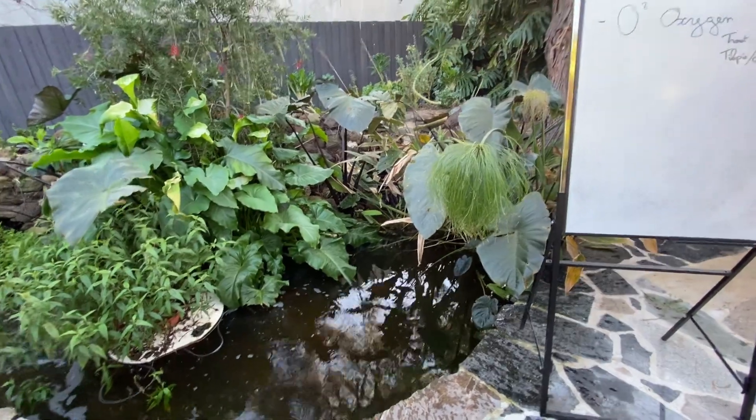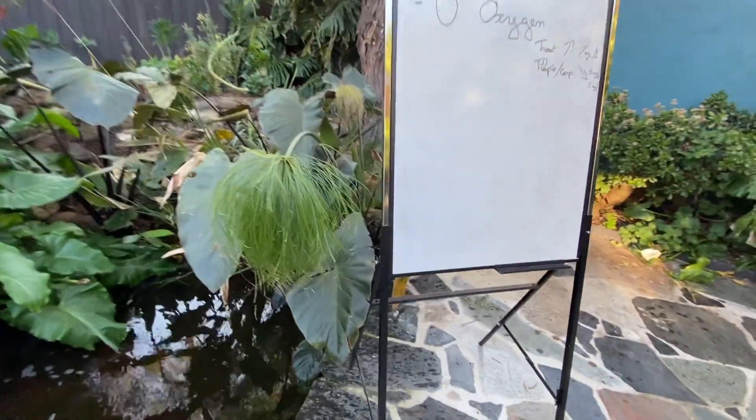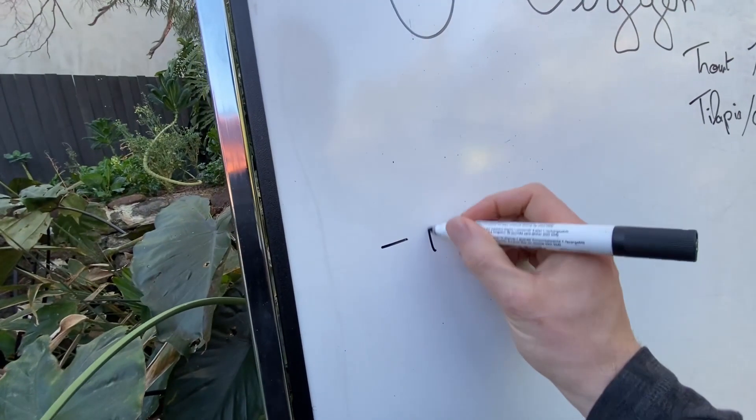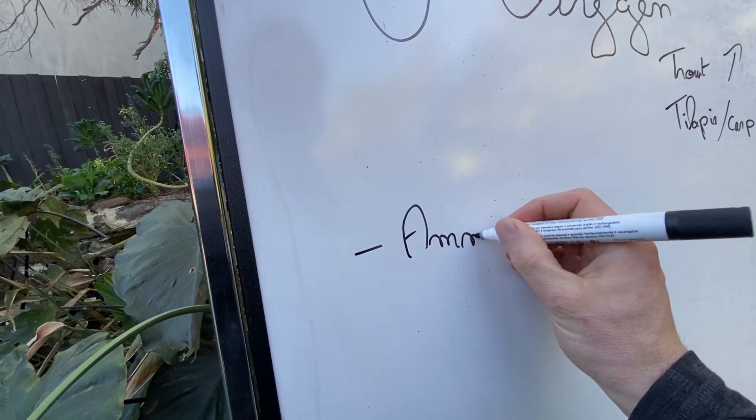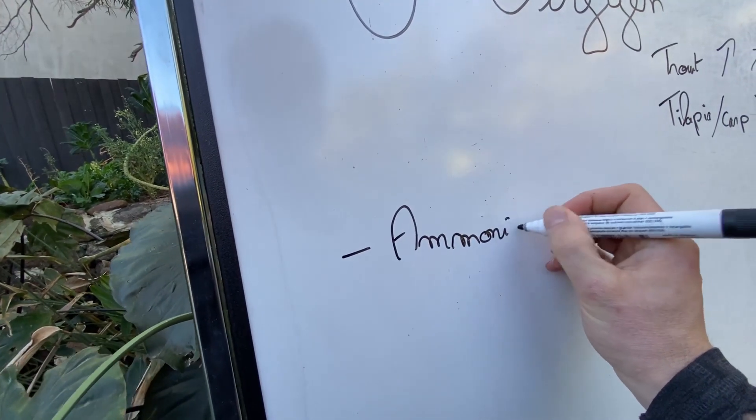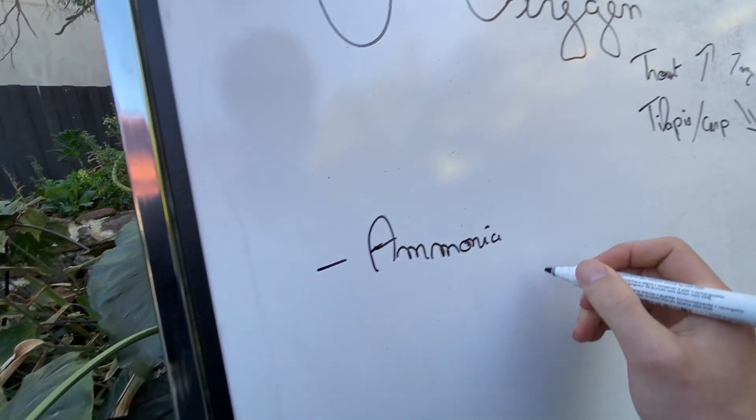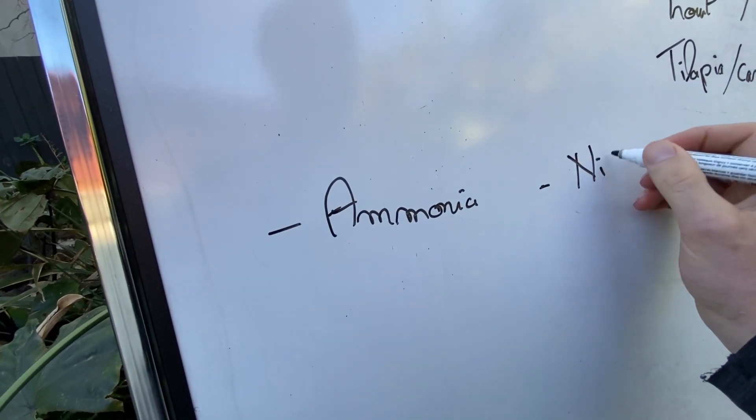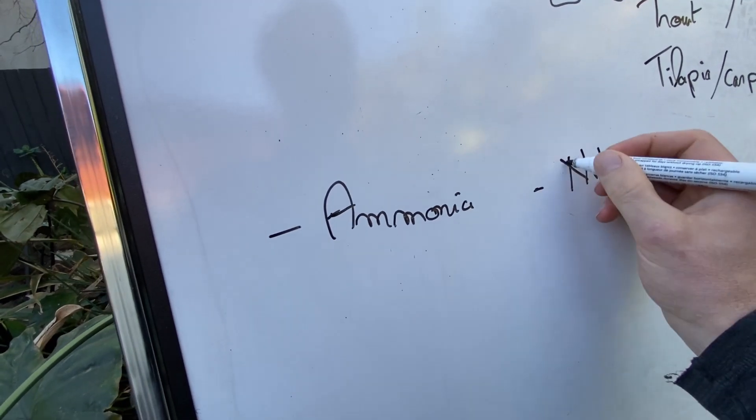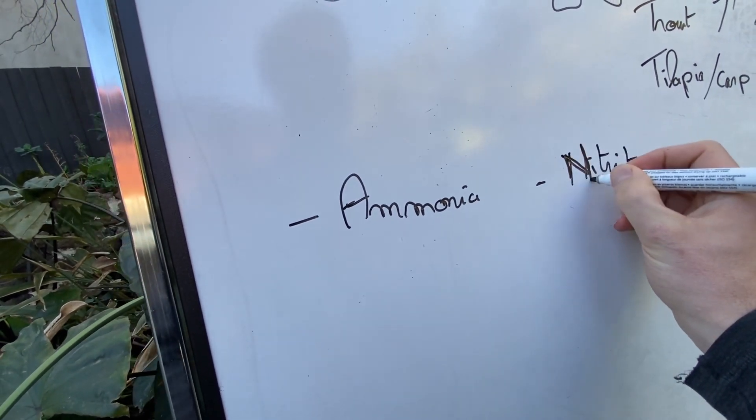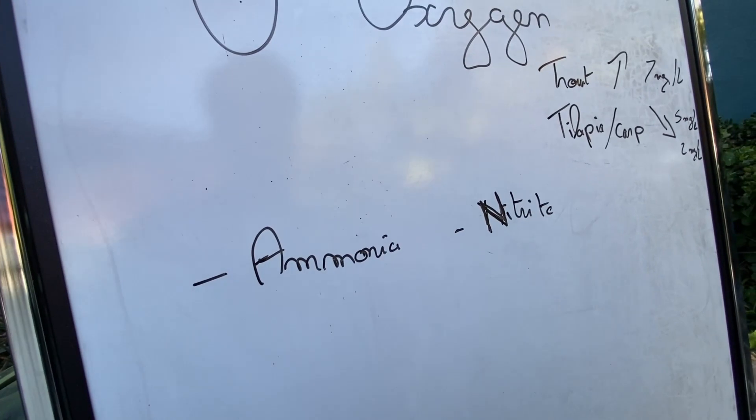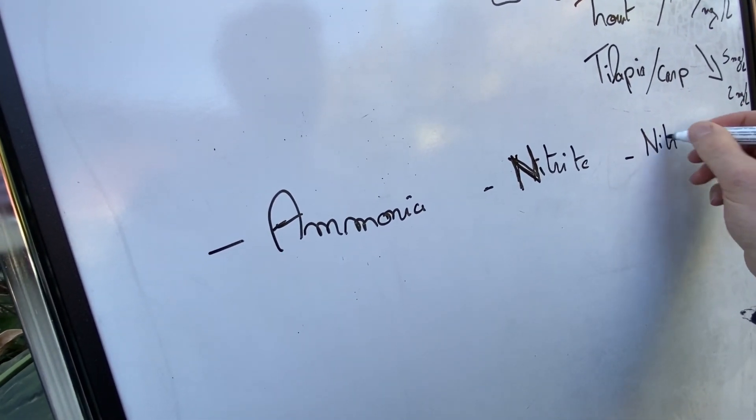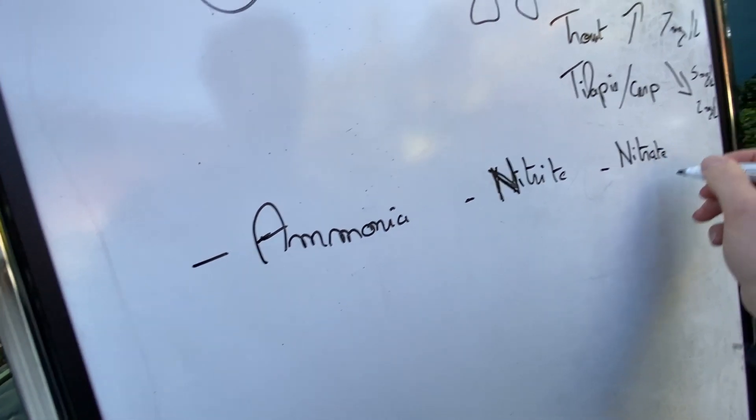So oxygen is one. Then what else? Well, basically, we are talking about the water parameters here. And in terms of water parameters, we got a few that are toxic. So ammonia, ammonium, it's a couple NH3, NH4. We got nitrite. And we got nitrate.